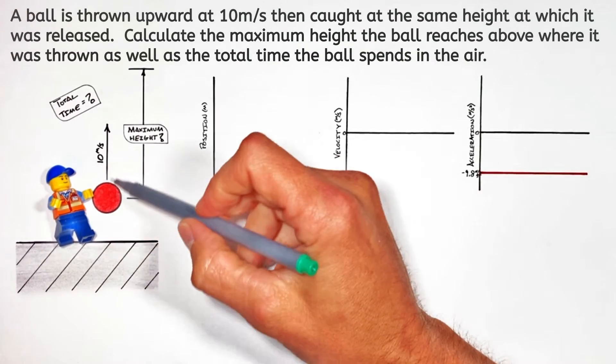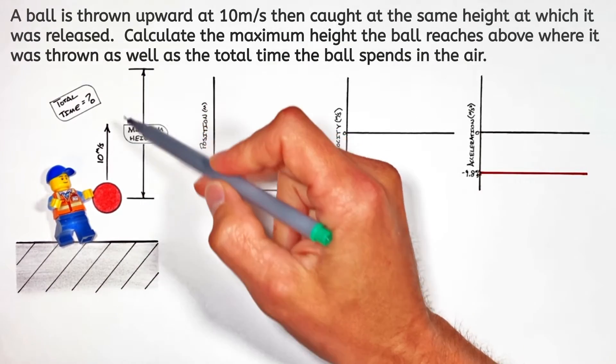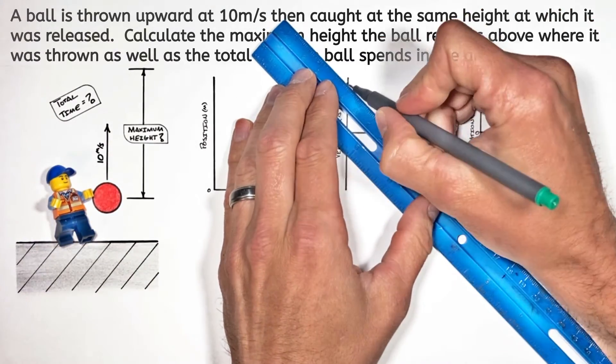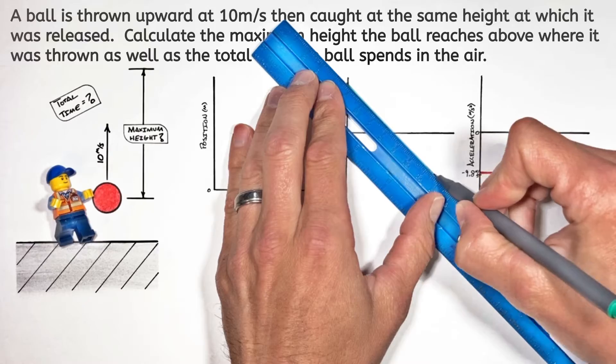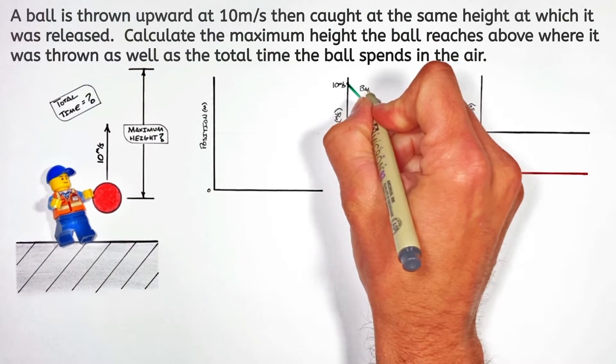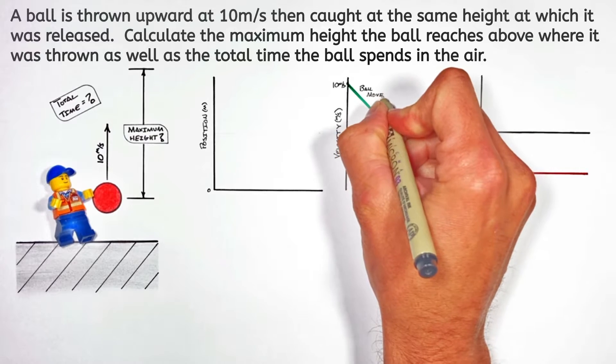The ball is thrown up in the air at 10 meters per second and then it comes back down, so on our graph we'll see a diagonal line with a steady slope of negative 9.8 meters per second per second.